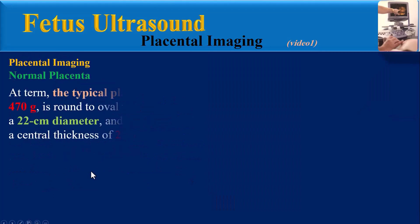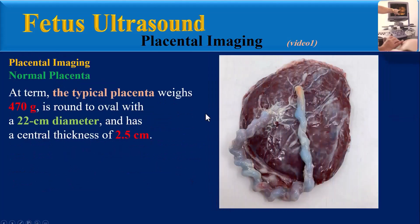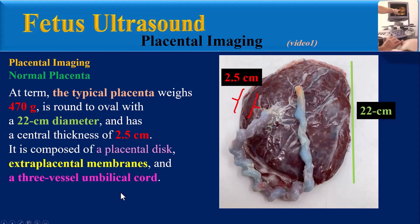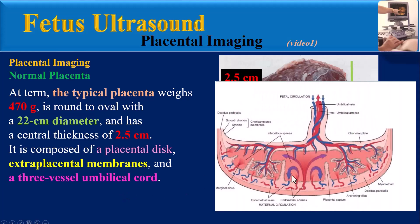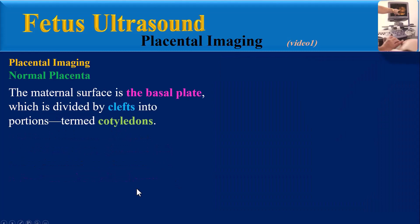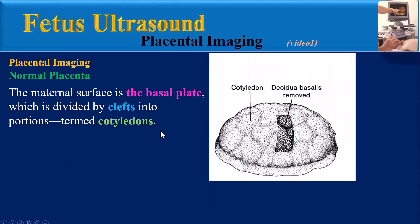Normal placenta. At term, the typical placenta weighs about 470 grams, is round to oval with a 22 cm diameter, and has a central thickness of 2.5 cm. It is composed of a placental disc, extraplacental membranes, and a three-vessel umbilical cord. The maternal surface is the basal plate, which is divided by clefts into portions termed cotyledons.